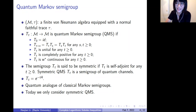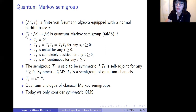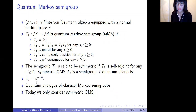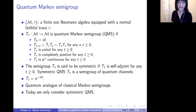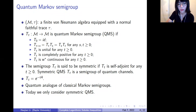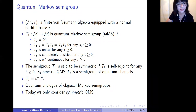We want to study a very nice QMS which is symmetric — that is to say, for every time t, T_t is a self-adjoint operator. For such a quantum Markov semigroup, we can always find a generator. We only focus on symmetric quantum Markov semigroups defined on a finite von Neumann algebra. The whole definition is kind of complicated, so I want to mention an example which is basically the most classical example of a quantum Markov semigroup.